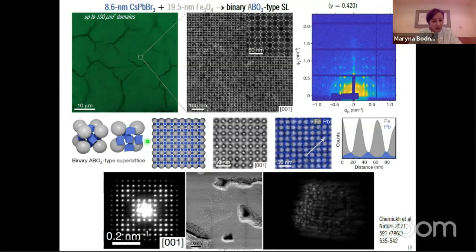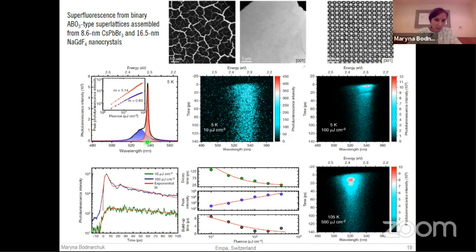Of course we were very interested to see the optical properties from such structures. We observed signs of collective emission, and qualitatively we observe exactly the same behavior as before: all typical characteristics like red-shifted emission band, accelerated radiative rates at higher fluences, and characteristic oscillations at higher fluences. In the time domain, coherence is established before the emission burst — everything as observed before.